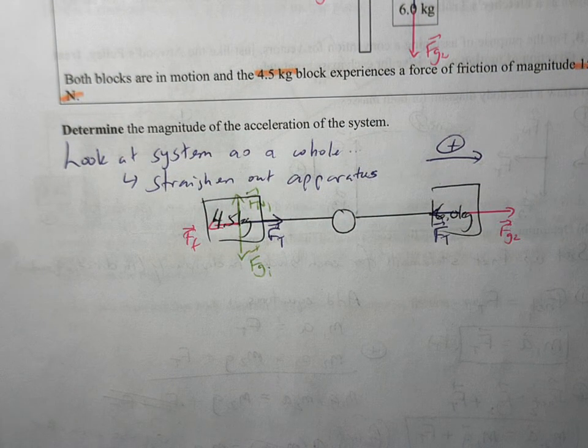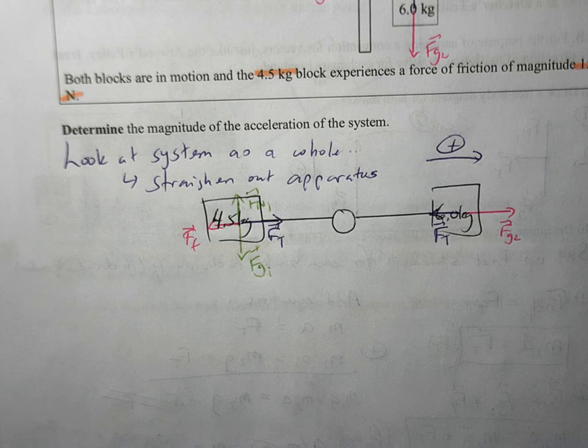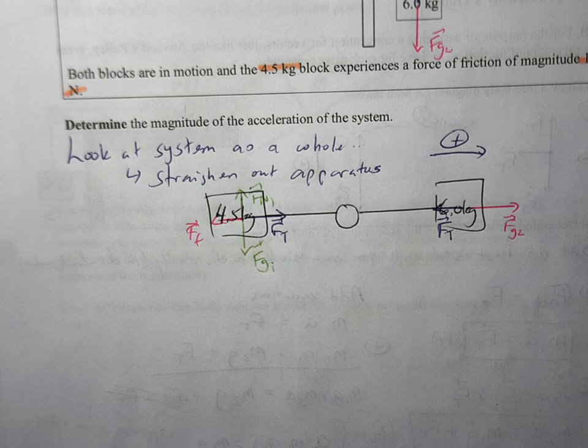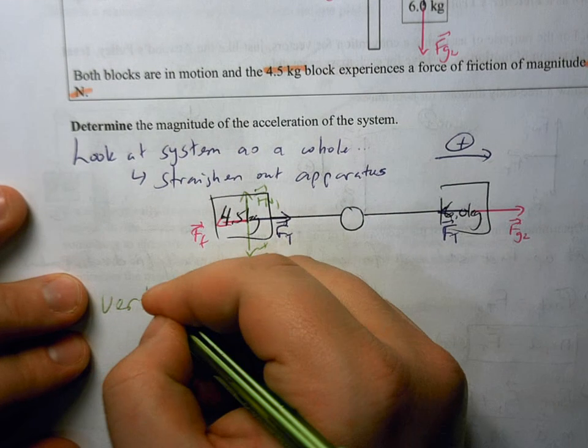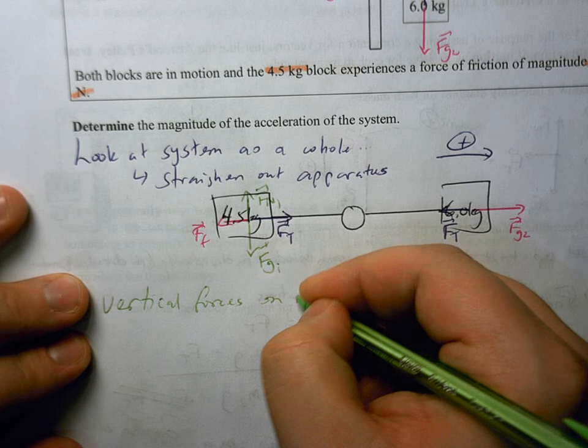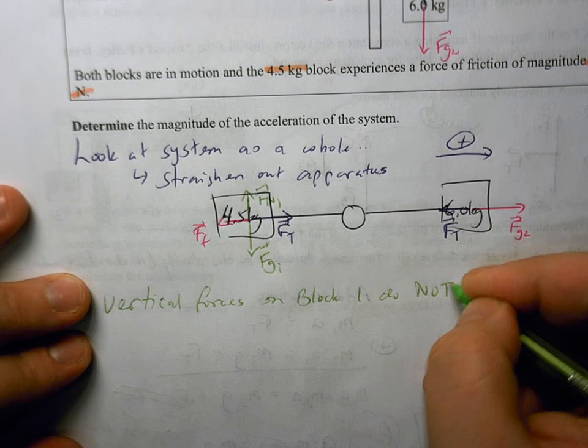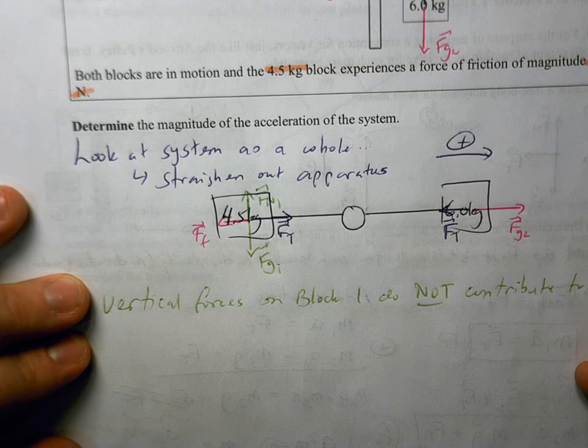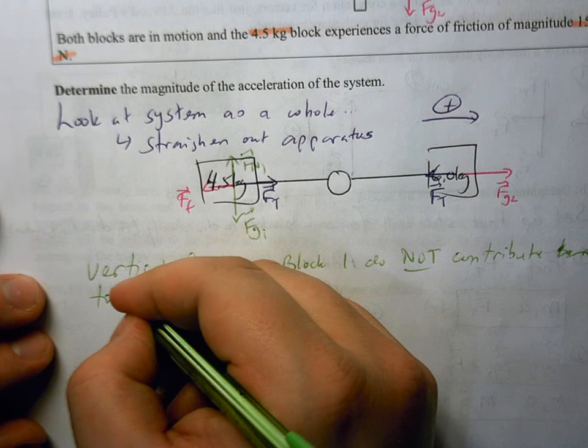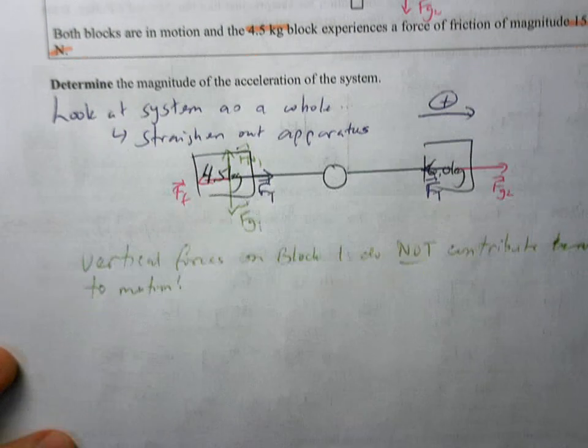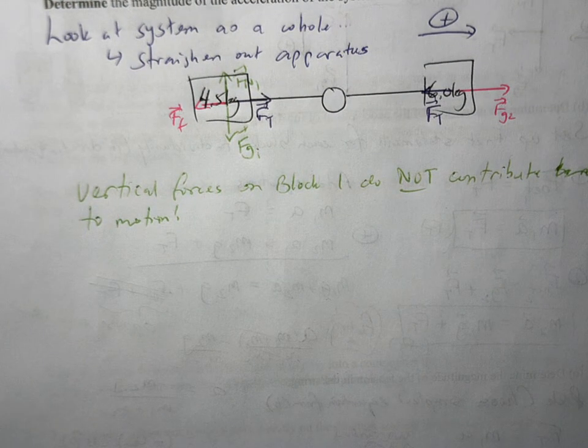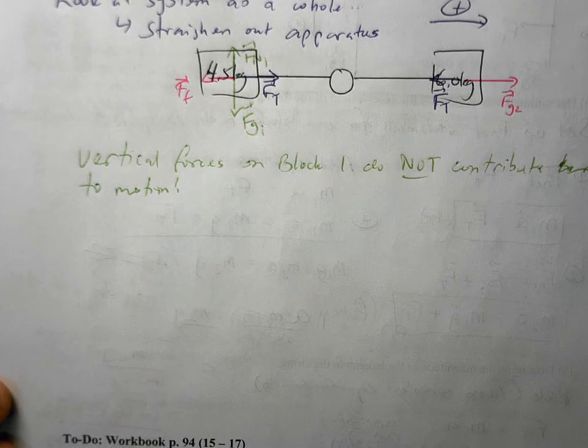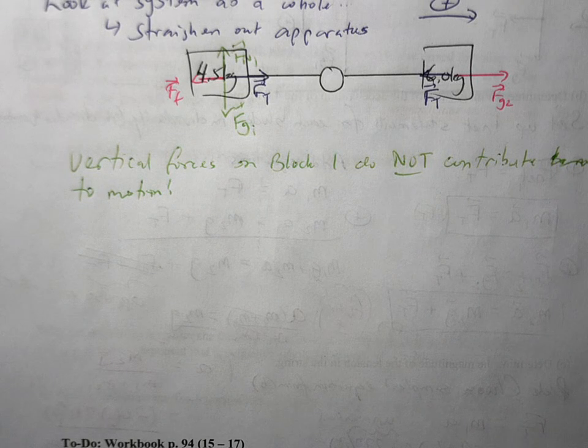Now, again, what we're interested in is we're looking at the net force in the direction of motion. The vertical forces do not contribute to the motion. So vertical forces on block 1 do not contribute to motion. So we actually do not care about them at all. So we're going to kind of ignore them. They will deal with the friction aspect, but that has to deal with coefficients of friction. We'll get to that bit later. So those vertical forces on block 1 are not going to actually affect the motion.